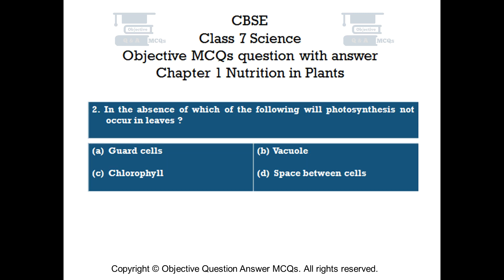Question number 2. In the absence of which of the following will photosynthesis not occur in leaves? Option A: guard cells. Option B: vacuole. Option C: chlorophyll. Option D: space between cells.